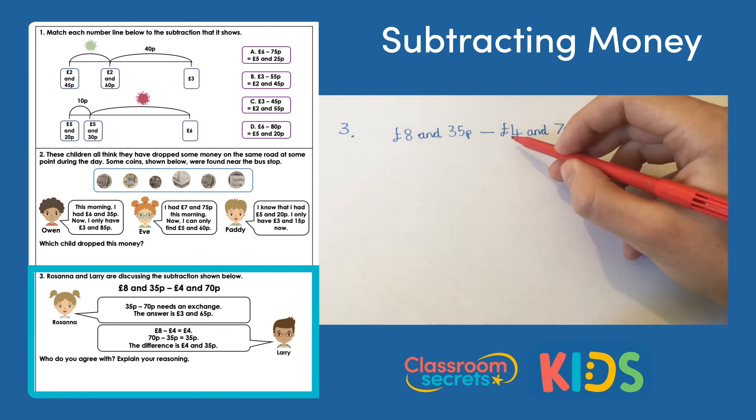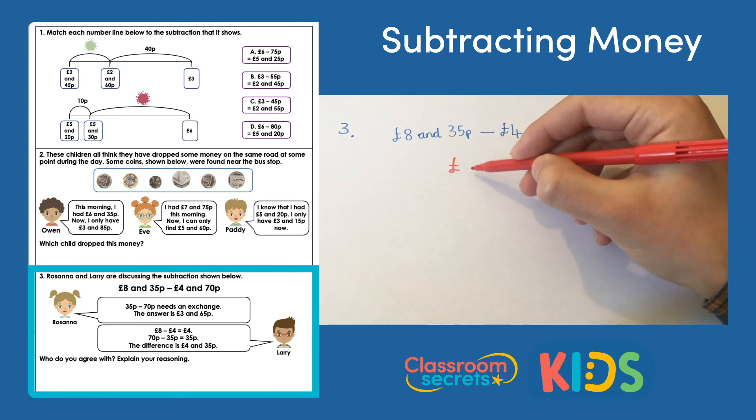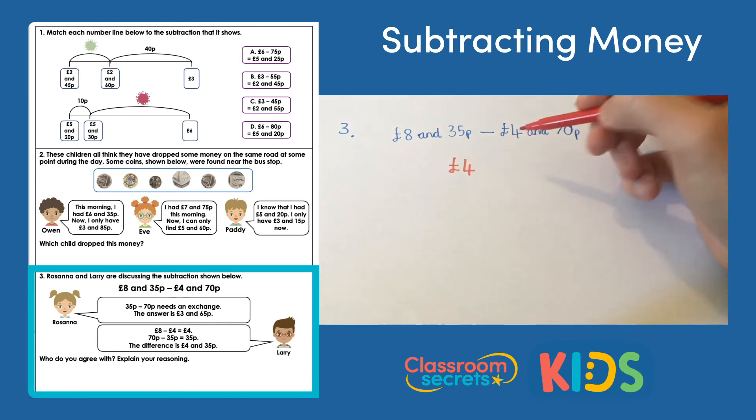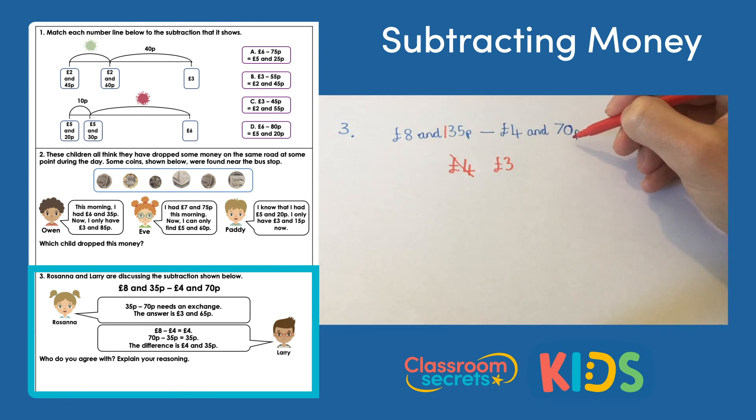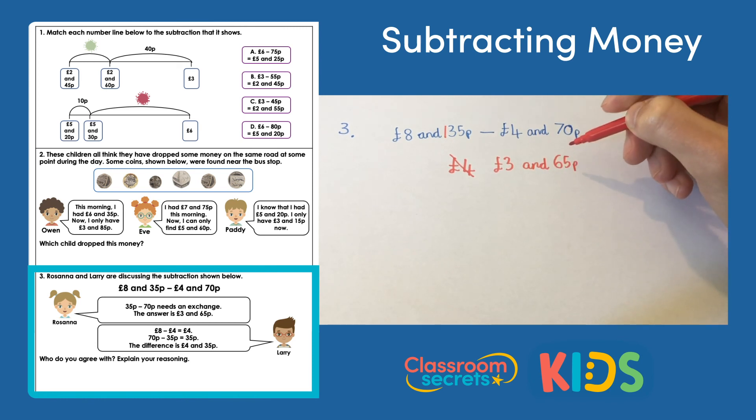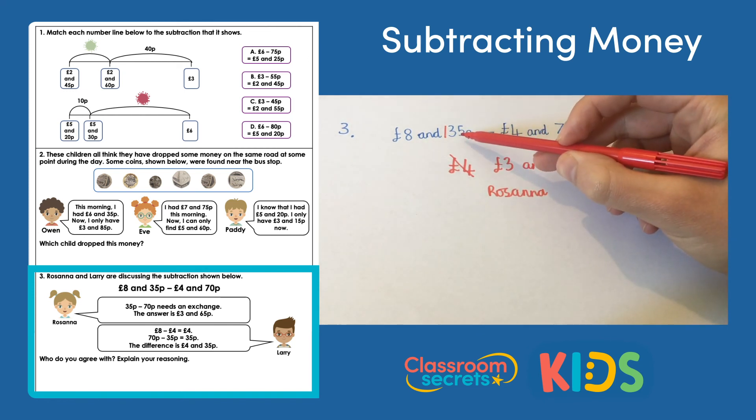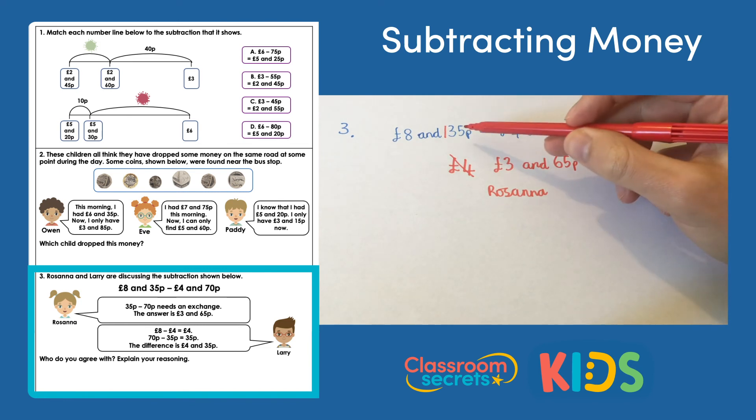So eight pounds take away four pounds, take away your pounds first, that's four pounds. Then 35p take away 70p, we can't do that because 70p is more than 35p. So I can exchange or swap one of those pounds. Now I have three and put it in front of my 35p. So now I have 135 pence take away 70 pence and that is 65 pence. So it'll be three pounds and 65p, which means Rosanna is correct. An exchange was needed because we couldn't take away 35p take away 70p because 70 was more than 35.